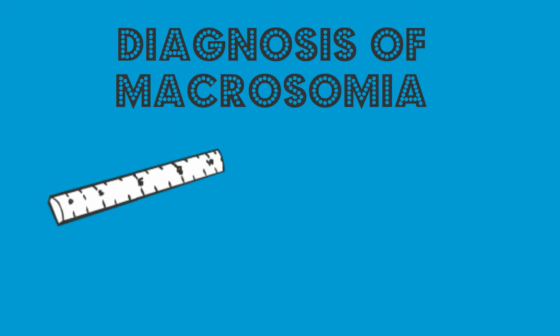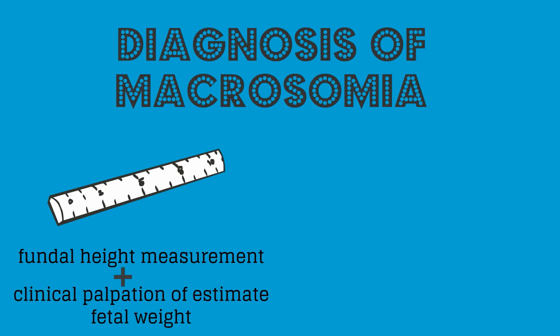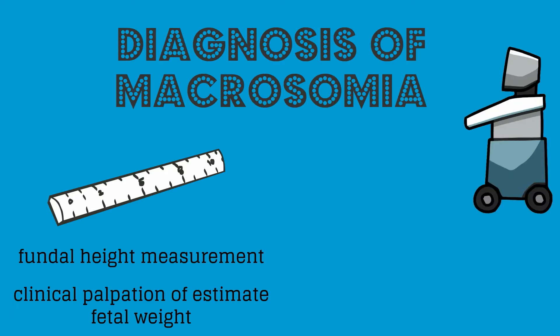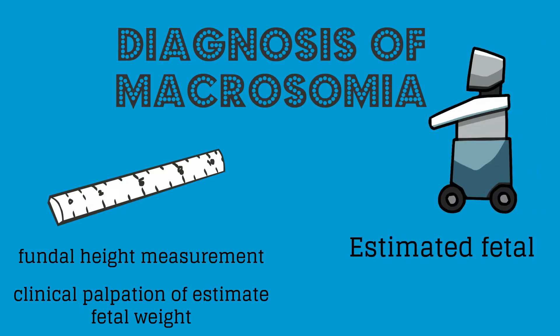The diagnosis of macrosomia can be challenging. Many clinicians measure the fundal height above the maternal symphysis pubis. This measurement is commonly performed; however, it is a poor predictor of fetal macrosomia and should be used in combination with clinical palpation of estimated fetal weight. Ultrasound-derived estimated fetal weights are associated with significant error when the fetus is macrosomic, and the true value of ultrasound is in ruling out macrosomia.